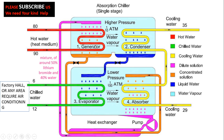Due to boiling point differences and different chemical properties, the water in the lithium bromide solution vaporizes at this temperature and pressure, while the lithium bromide itself does not evaporate — it remains in liquid form. So in the generator, the lithium bromide solution is separated: water vapors move toward the condenser, and the lithium bromide solution stays in liquid form.